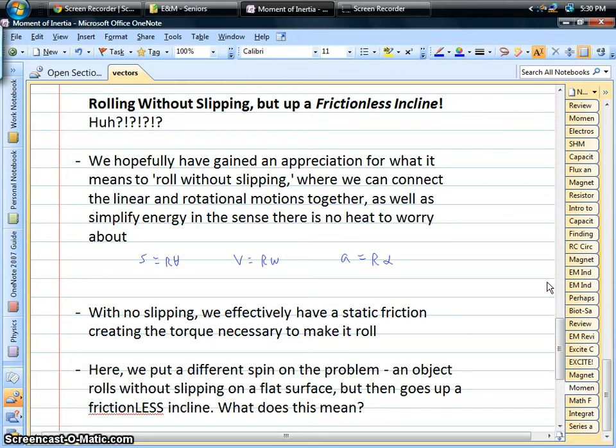What I've done here is just a quick reminder of what rolling without slipping means. Hopefully we're getting comfortable with this concept and what it implies. Basically we can connect the linear motion with the rotational motion. We've got both motions at the same time for a rolling object, so we can connect linear and rotational displacements, velocities, as well as accelerations here.